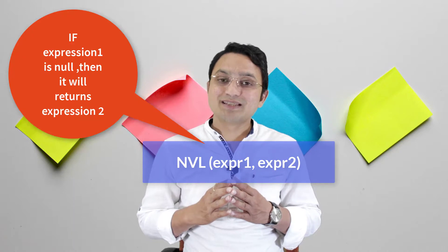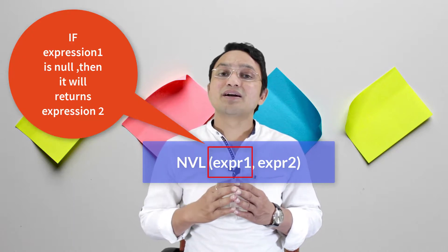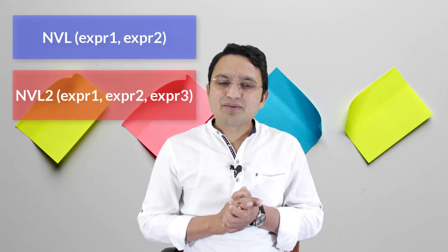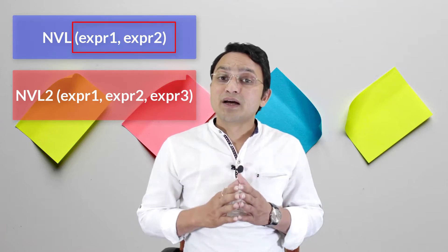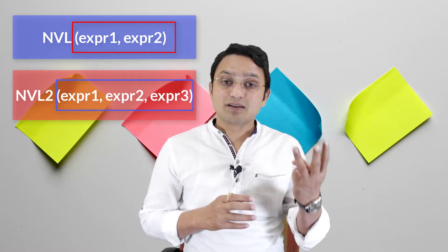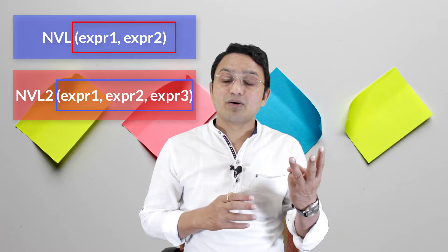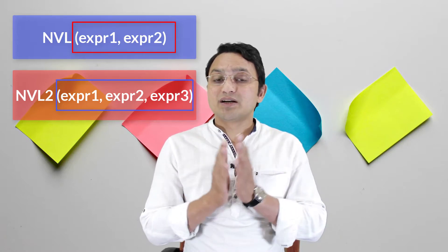Now if I talk about the NBL function: if expression one is null, then it will return the second expression. This is the big difference between NBL and NBL2. Another difference is that in the NBL function we give only two parameters or two expressions, but in the NBL2 function it requires three parameters.